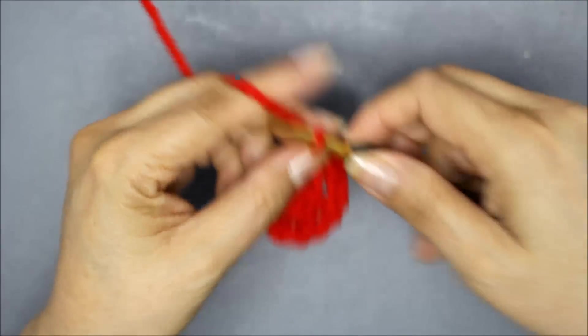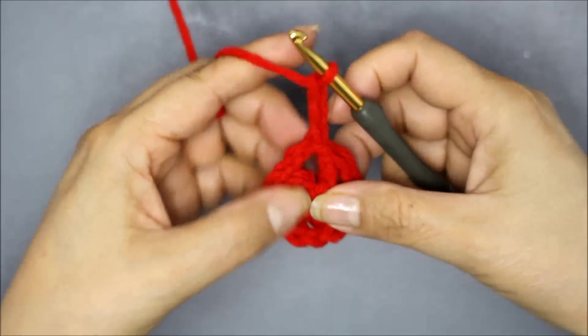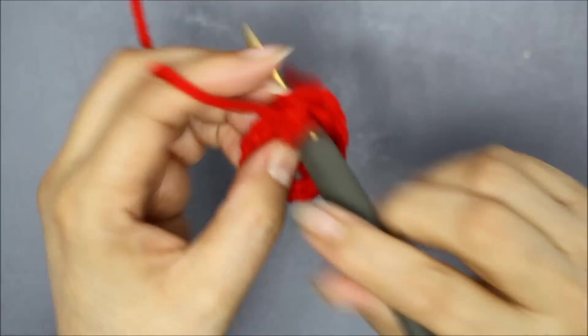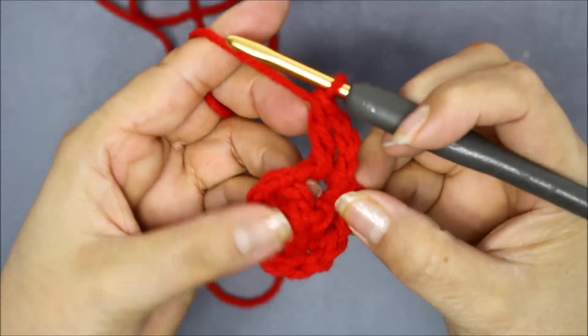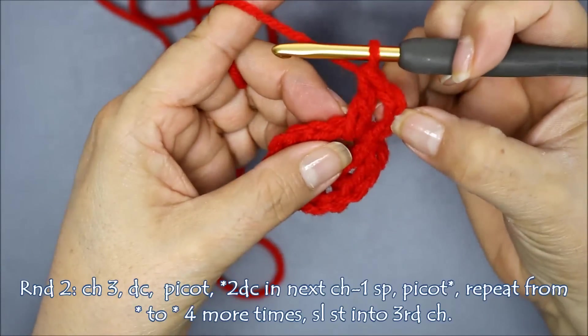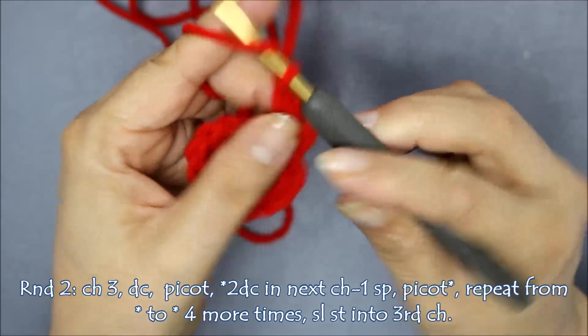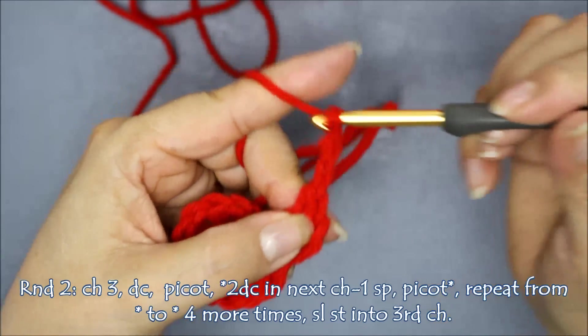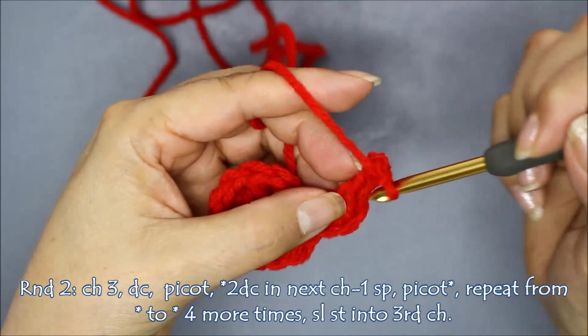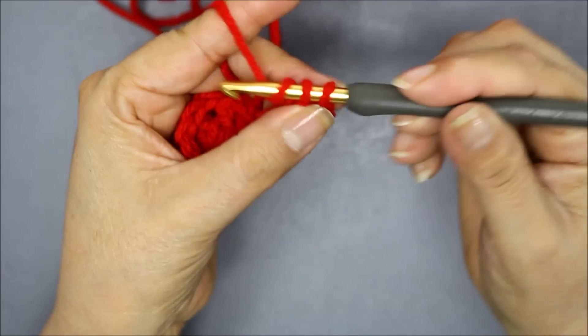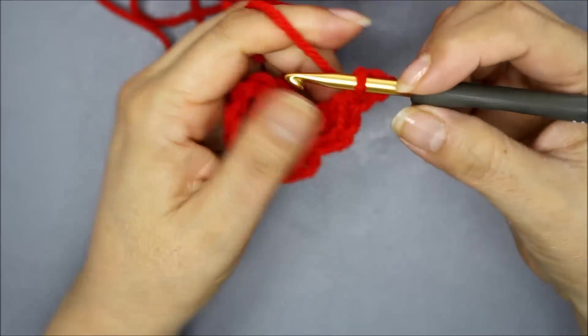I'm going to chain three. One, two, three. This is counting as my double crochet, double crochet again. Sorry guys, let me pull the yarn here. It's getting stuck. So I have two double crochets. Now I'm going to work a peacock stitch between here. Chain one, two, three. Then you slip stitch back into the first stitch. Pull out your yarn. There will be two little loops there. Then you pull through those. So that creates that little point.